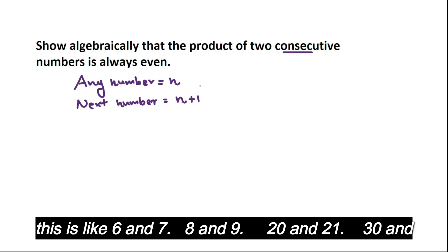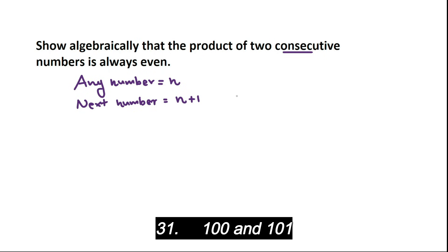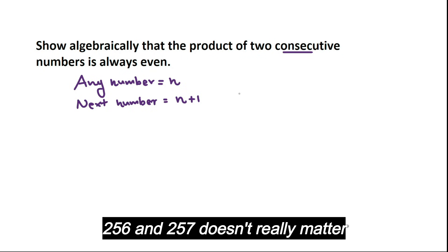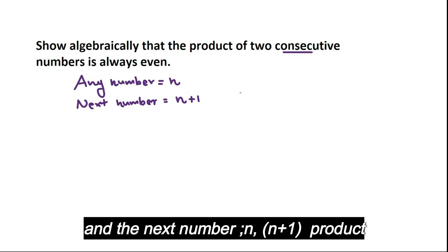This is like 6 and 7, 8 and 9, 20 and 21, 30 and 31, 100 and 101, 256 and 257. Doesn't really matter. Any number and the next number is N and N+1.